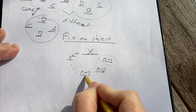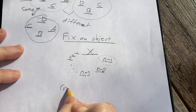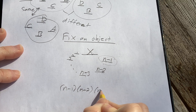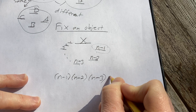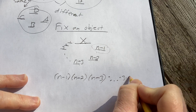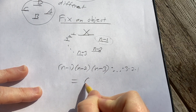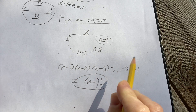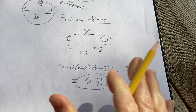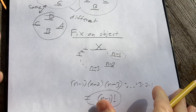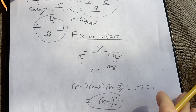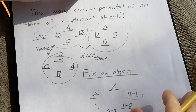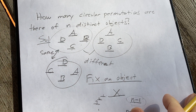By the multiplication rule, you just multiply all these together and you get (N−1) × (N−2) × (N−3) × ⋯ × 3 × 2 × 1. This yields the familiar formula (N−1) factorial. So there are (N−1)! arrangements or permutations of N distinct objects. Hopefully this has helped you understand circular permutations a little bit better. Good luck to you.